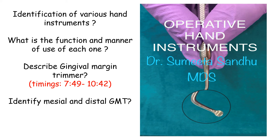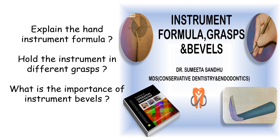In the spotters, you can be asked to identify various hand instruments. I have a video on operative hand instruments covering identification, function, and manner of use, with special emphasis on the gingival marginal trimmer — a very popular question. You should know how to identify mesial and distal GMT, how to use it, and left versus right side. You may also be asked to explain the hand instrument formula — three-number and four-number types, each number's significance — and to hold instruments in different grasps such as modified pen grasp, pen grasp, or palm-and-thumb grasp, and to know about bevels and their significance.